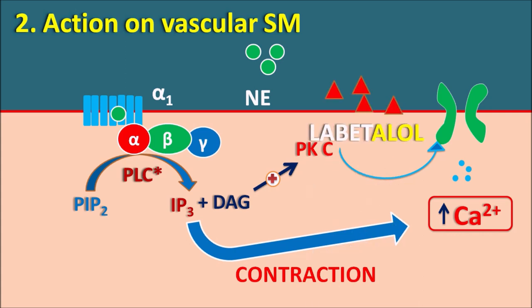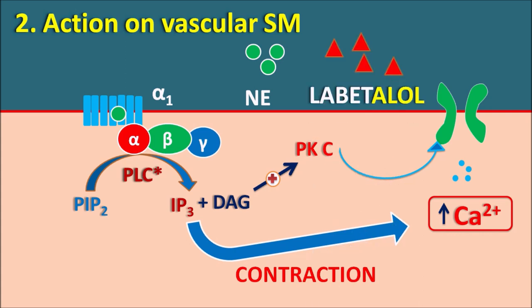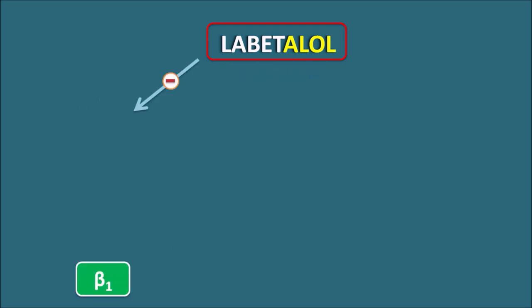Labetalol acts as an alpha-1 blocker. By blocking alpha-1 receptors, it inhibits the action of norepinephrine on vascular smooth muscle, thereby producing vasodilation.